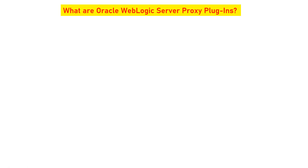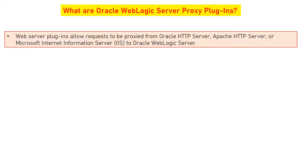What are Oracle WebLogic server plugins? Web server plugins allow requests to be proxied from Oracle HTTP server, Apache HTTP server, or Microsoft Internet Information Server to Oracle WebLogic server. So whatever web server you are using — whether OHS from Oracle, open source Apache, or IIS from Microsoft — if you need to redirect the traffic to WebLogic server, then you have to configure the specific corresponding plugins.